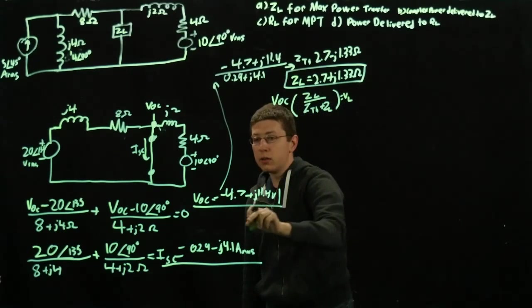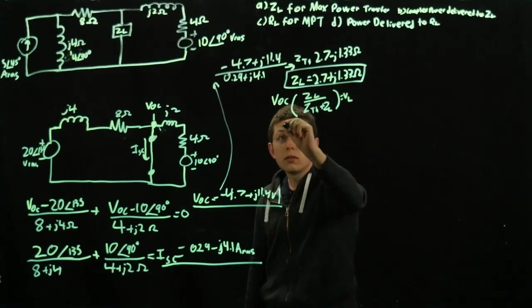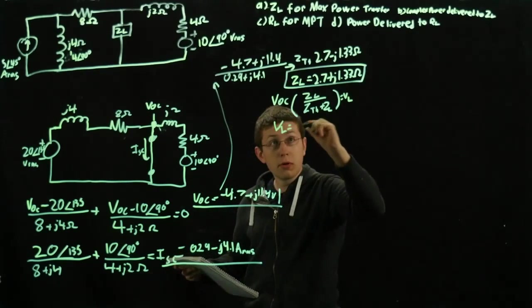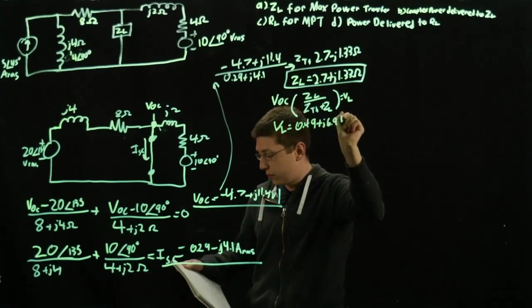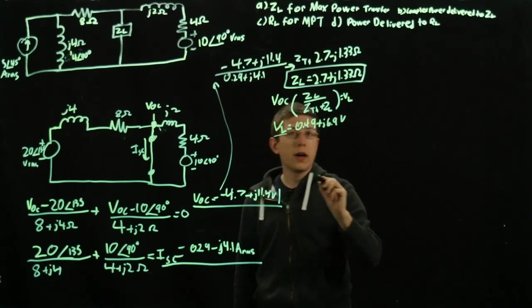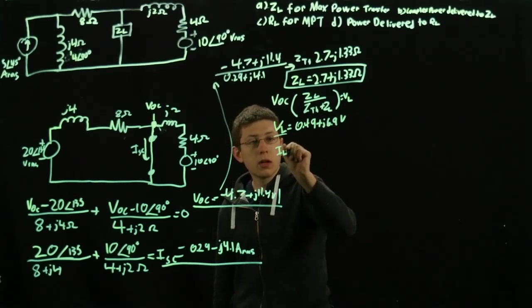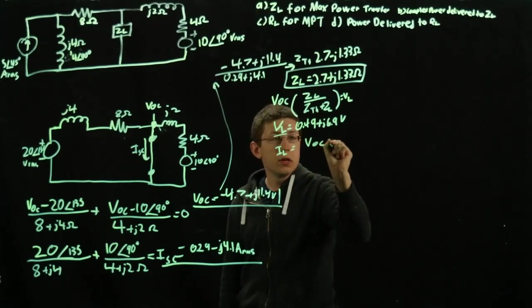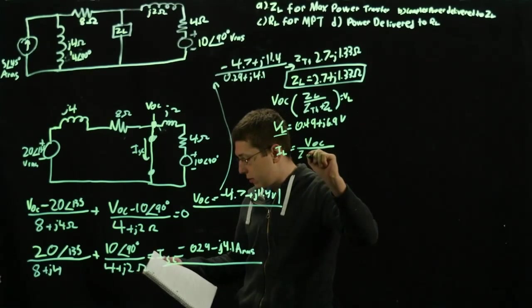When we substitute in VOC, our ZL here and Z Thevenin here, we're going to get VL equals 0.49 plus J6.9 volts. So we have VL. To find our power though, we also need IL. IL we find by doing our VOC over Z Thevenin plus ZL.